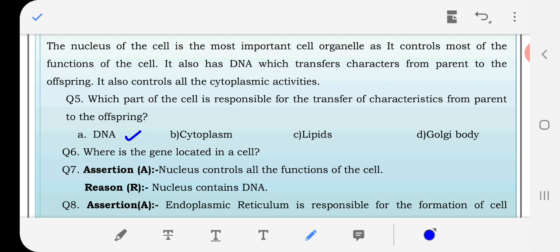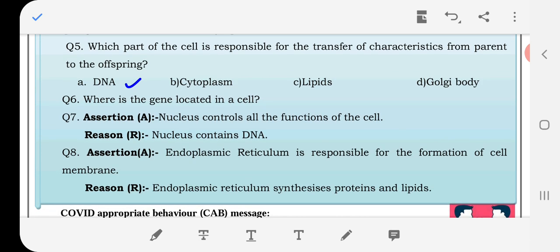Next question, assertion A: nucleus controls all the functions of the cell. Reason R: nucleus contains DNA. The answer is B because this is correct reasoning but there is no direct connection between the assertion and reason.